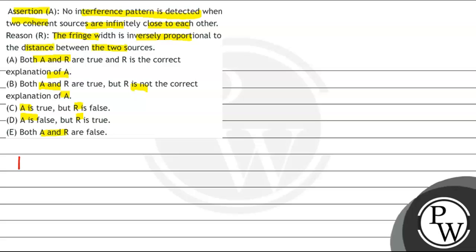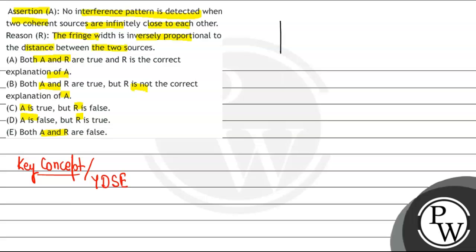The key concept we are going to use here is YDSE — Young's Double Slit Experiment. Young created two slit sources using the same light source, which is why they are coherent sources. So suppose we have S1 and S2 as the two coherent sources.